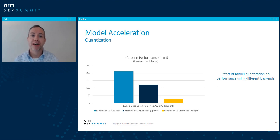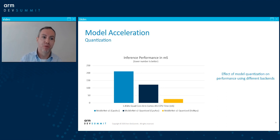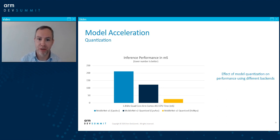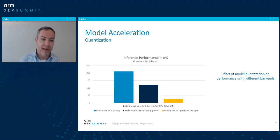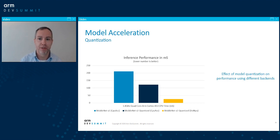Interestingly, what's not shown in this slide is what happens when your model is not optimized for the hardware. For example, if we run a non-quantized model on the NPU, performance goes way the other direction — instead of 25 milliseconds, we get performance in the range of three seconds, which would be worse than just running it on the raw cores. The key message is: ensure you're using the correct backend support and that the model is optimized for the hardware — whether CPU, GPU, or NPU — and validate your choices in your backend preference list.